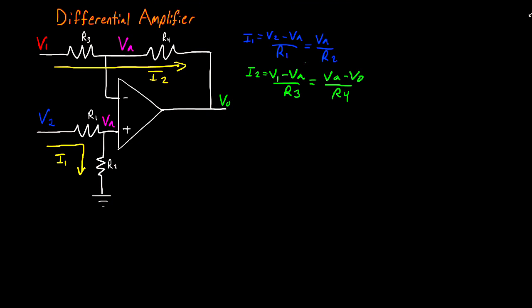Now ultimately, my end goal is to find V out in terms of my inputs. So my next task is to eliminate VA. So to do that, I'm going to solve my two I1 equations for VA. And rearranging these two, we get that VA is equal to R2 V2 divided by R1 plus R2. And really what this is is a voltage divider equation with these two resistors here.